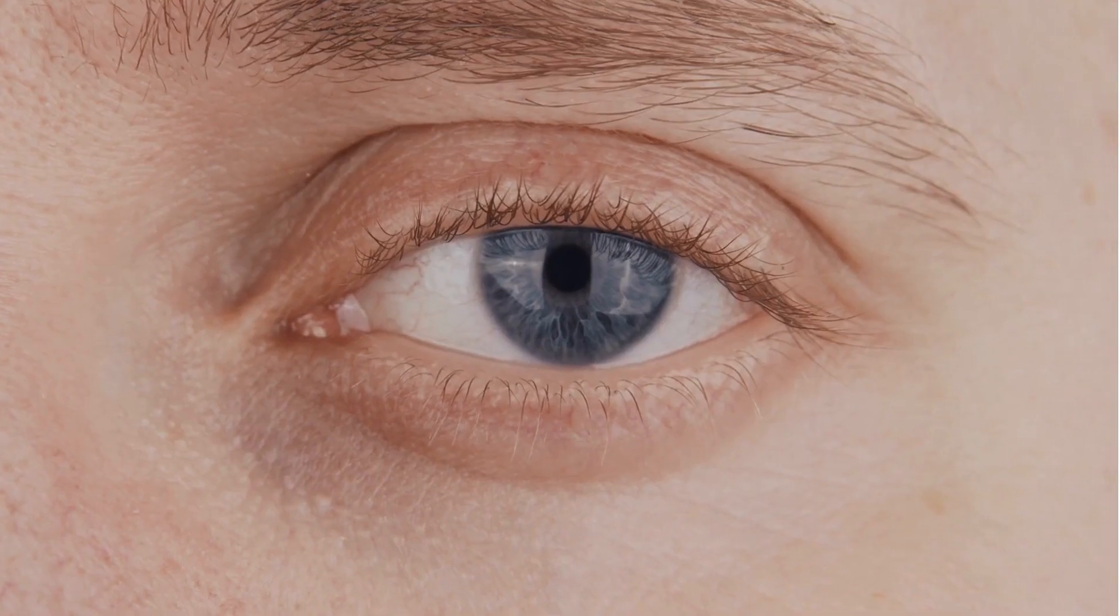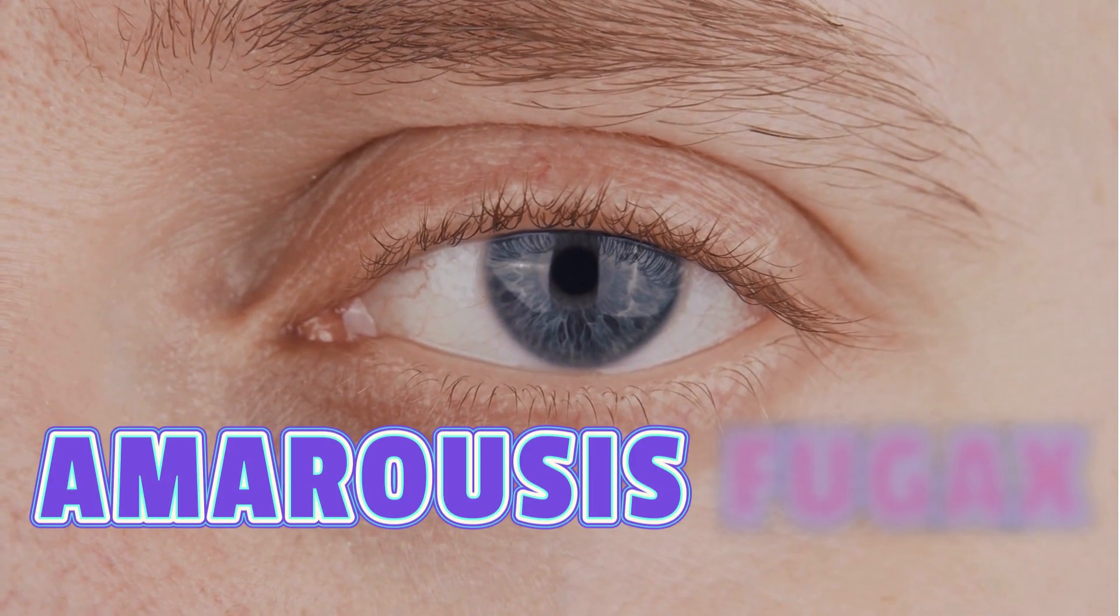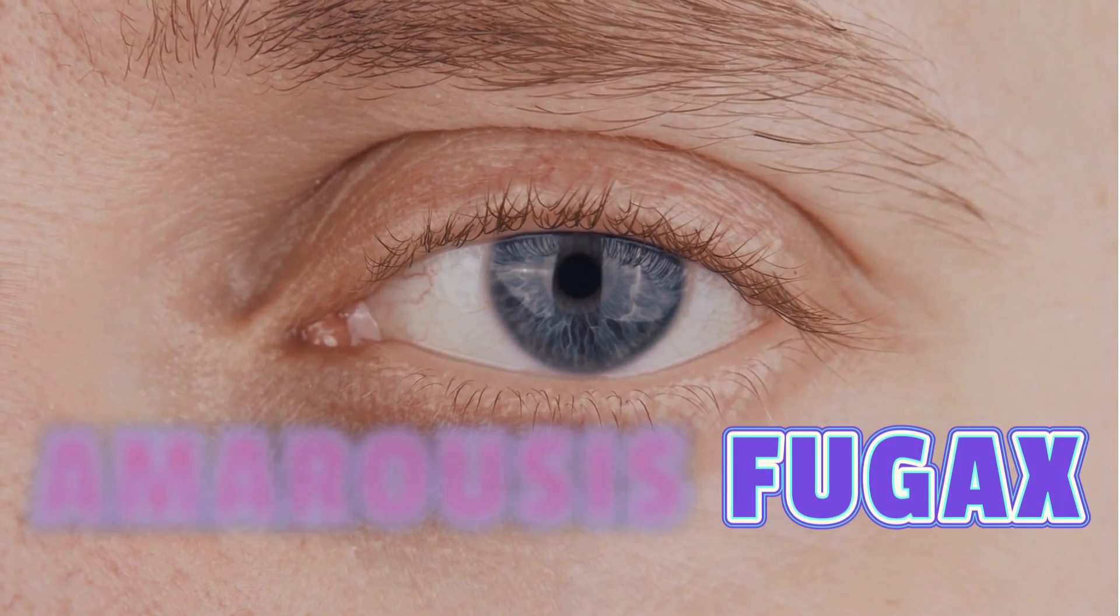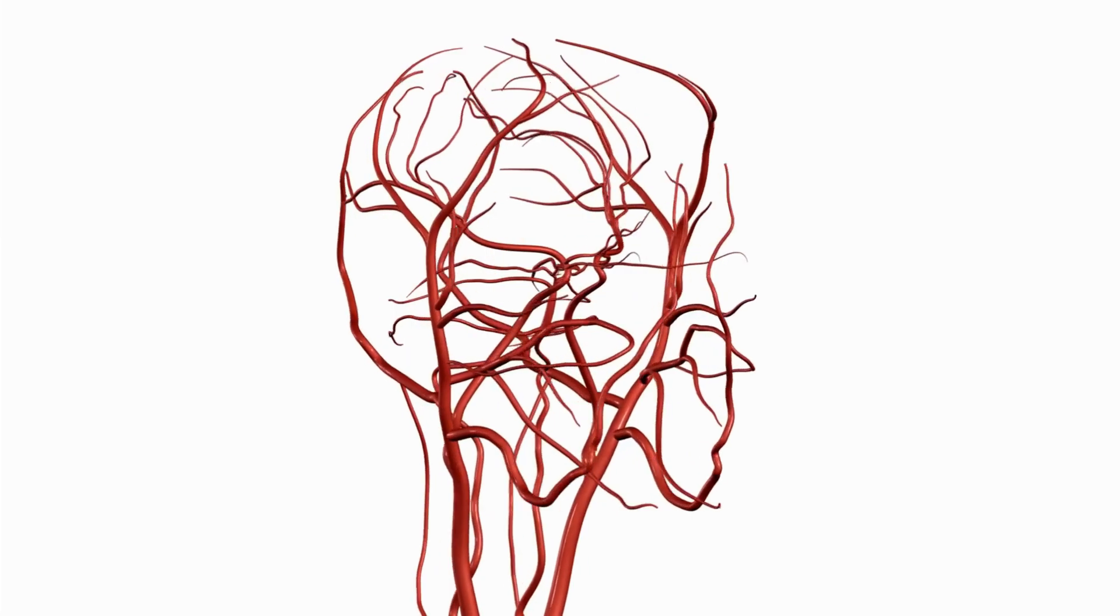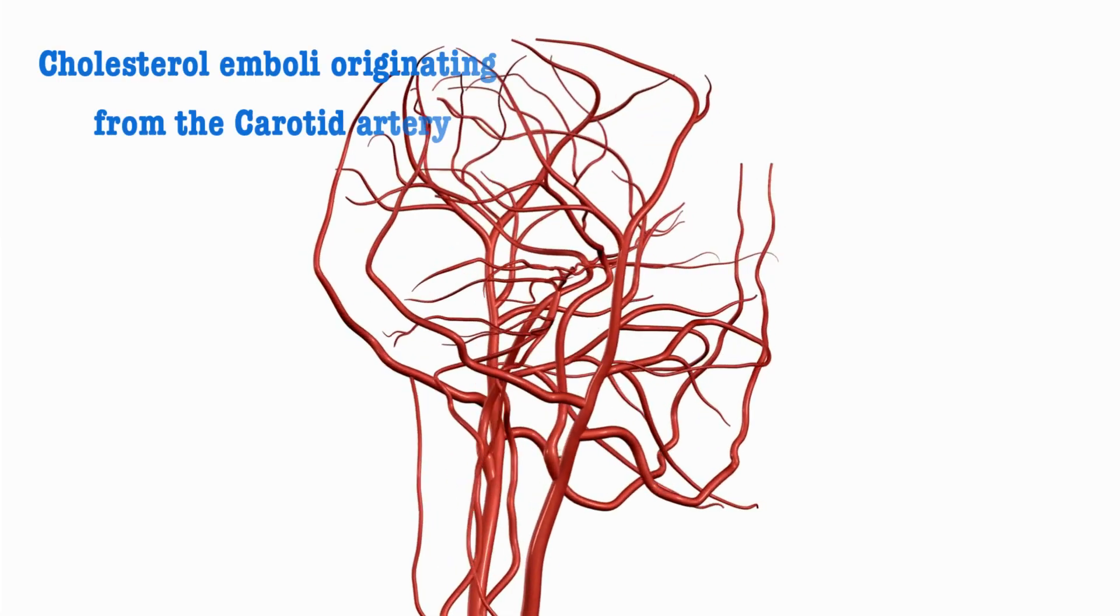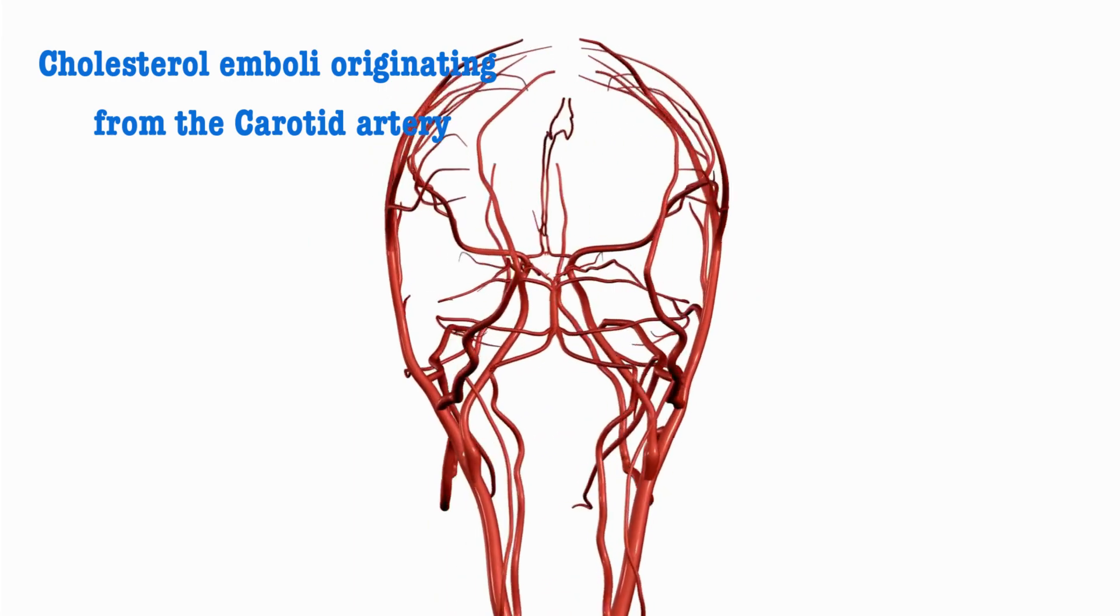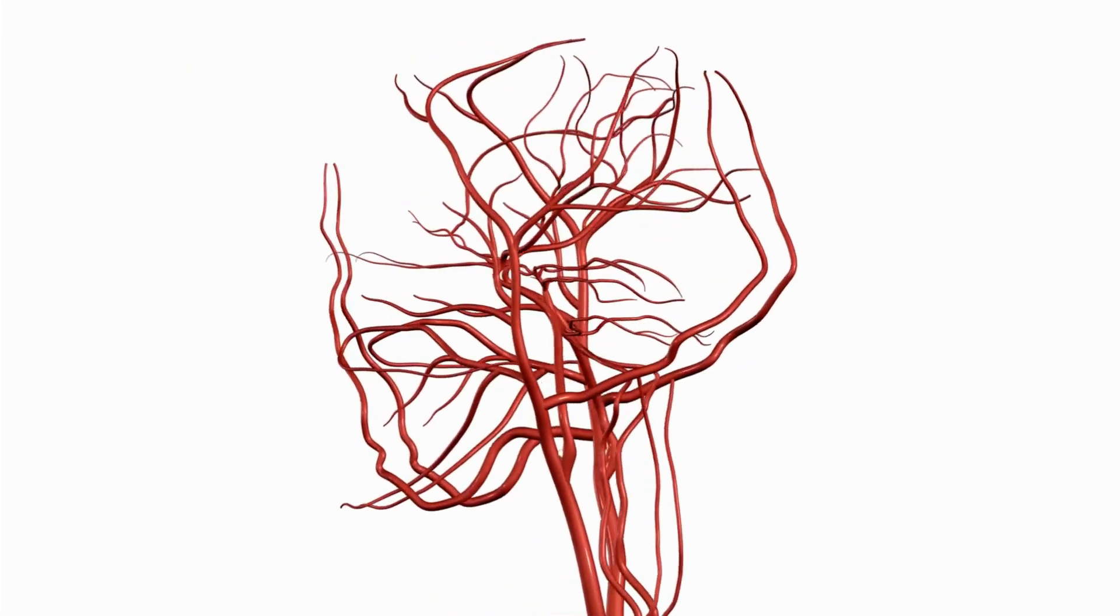The vision problem in these patients is also known as amaurosis fugax. It's a transient monocular blindness often described as a gray shade being pulled down over the eye. It's caused by retinal ischemia most often due to a cholesterol emboli originating from the carotid artery. Now let's talk about the risk factors.